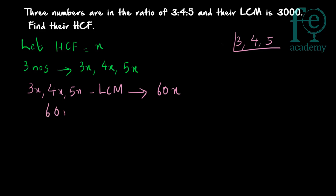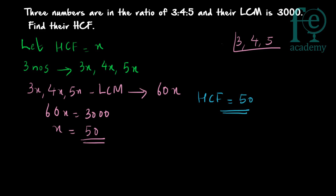So 60x is equal to 3000. From that you get x = 3000 ÷ 60, which gives you 50. And what is this x? x is equal to the highest common factor — that is what you had to find out. So your answer is HCF = 50.